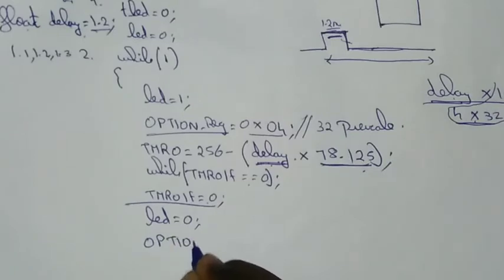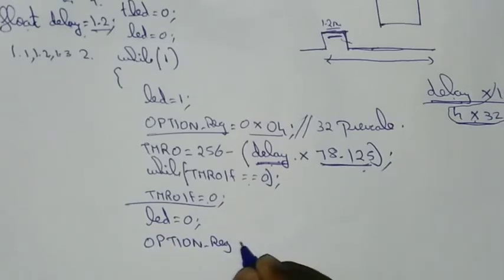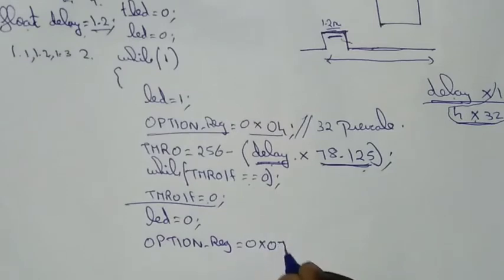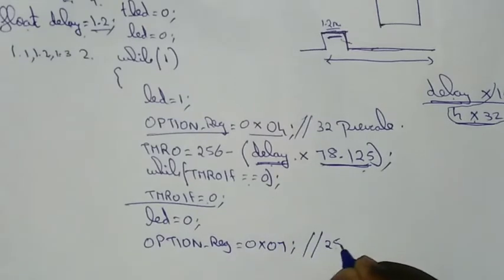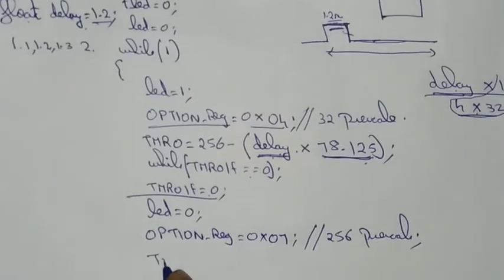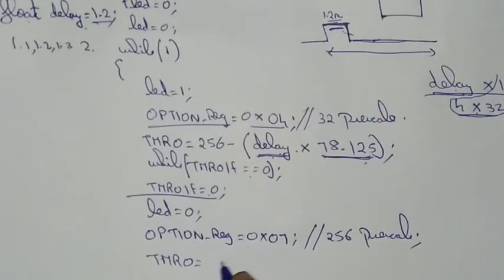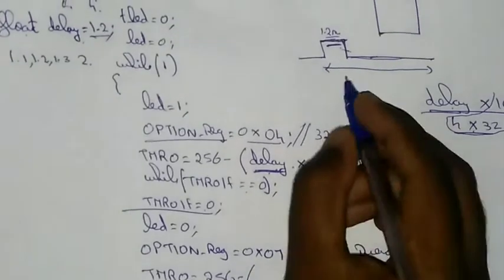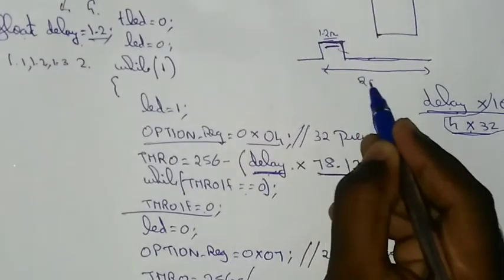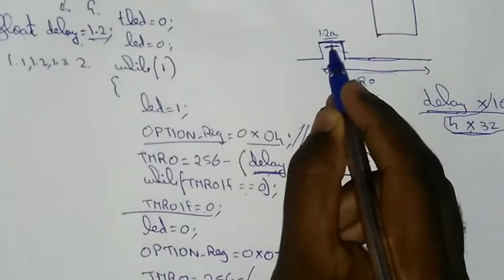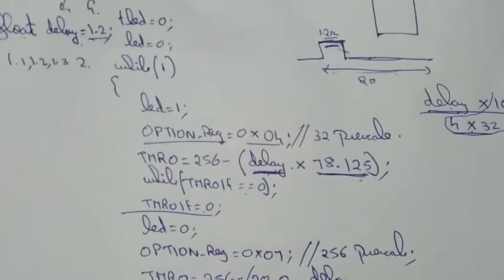This is the formula. This is the multiple parameter value — 0x07. This means 256 into prescale. TMR is equal to 256. If delay is equal to 20, total period minus this delay — 20.0 minus this delay. The bracket is equal to 1 answer.